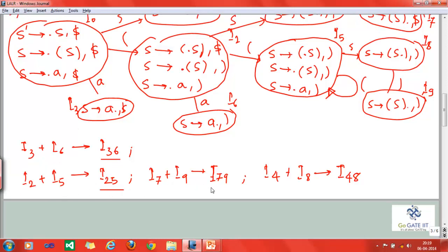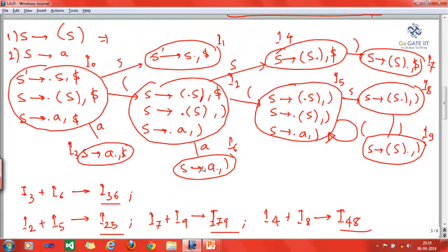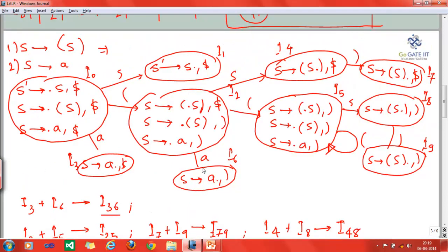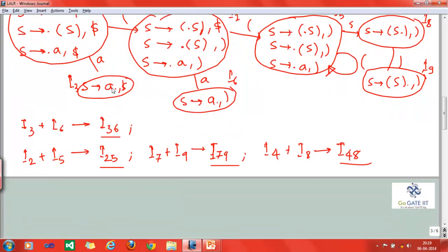Similarly, I2 and I5 gives I25, I79, I48. In this way, we can reduce the number of states generated in case of LALR parser, which is very much helpful if you consider the memory consumption and the complexity.